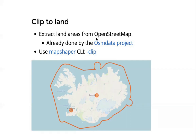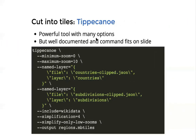Luckily somebody already did this in the OSM Land Data project, so the way to get this data is to just download it from there. Then I was using MapShaper, which is a JavaScript-based GIS operations tool that is quite powerful at handling big files and doing this kind of clipping operations.